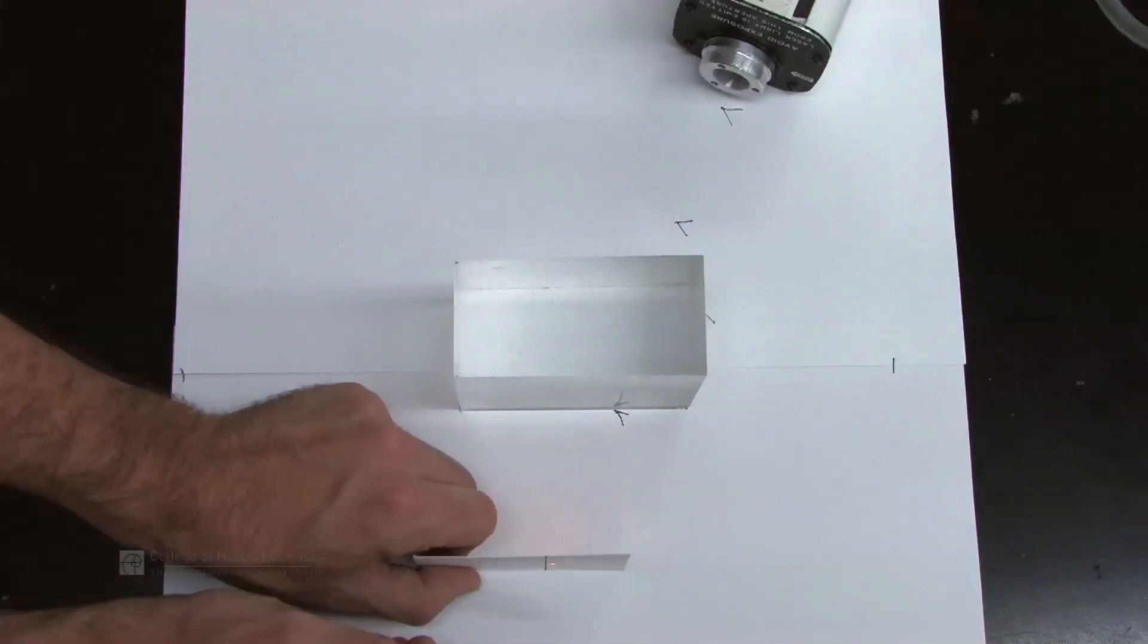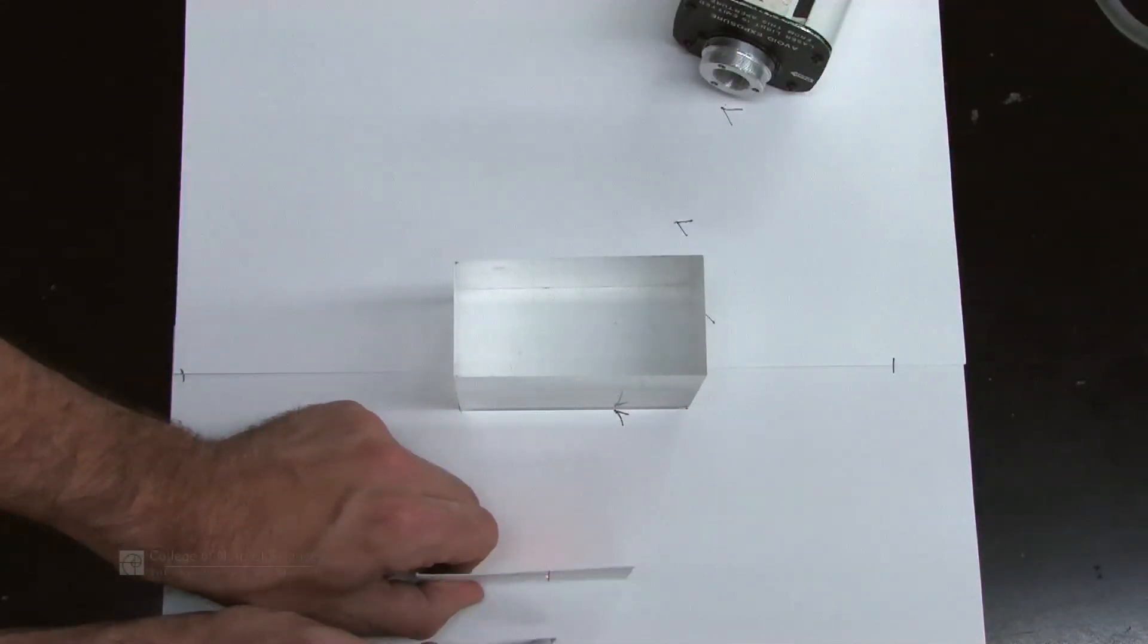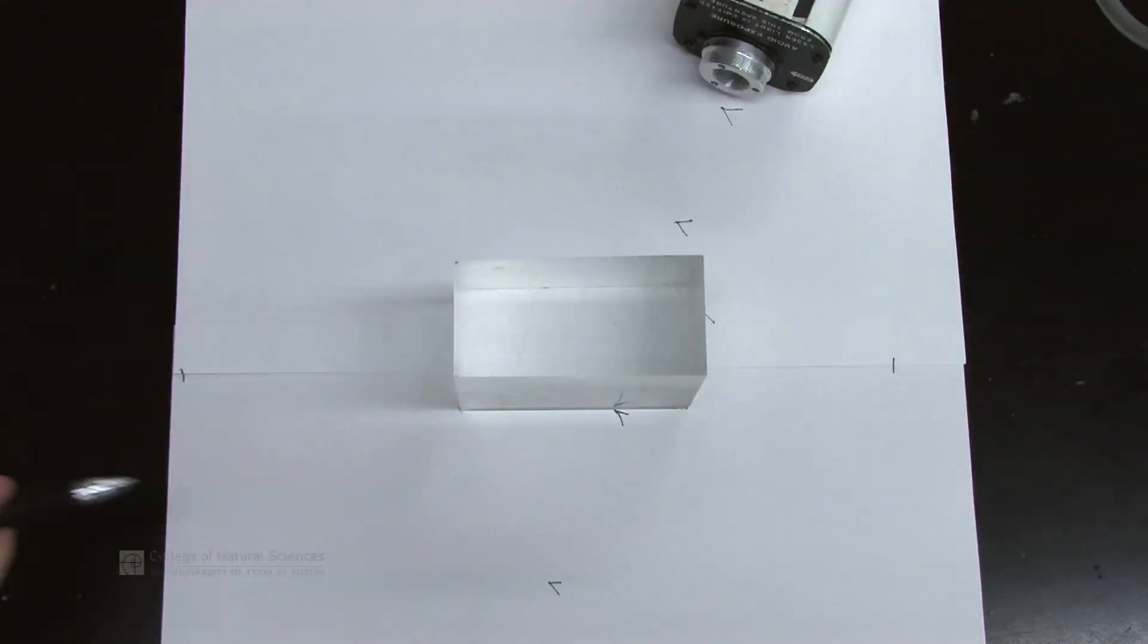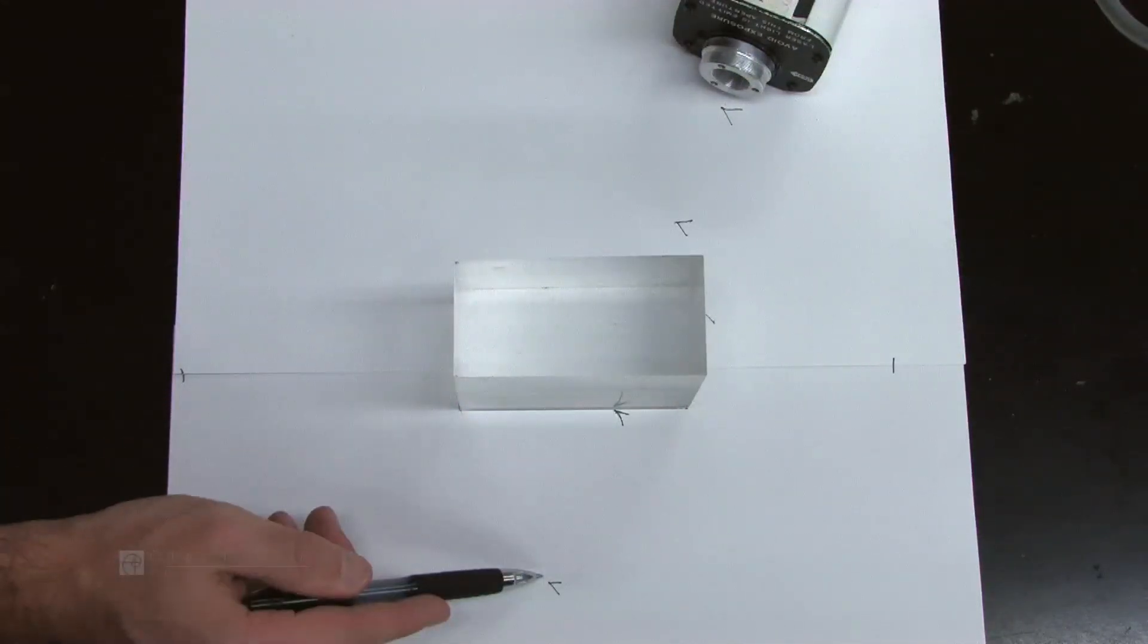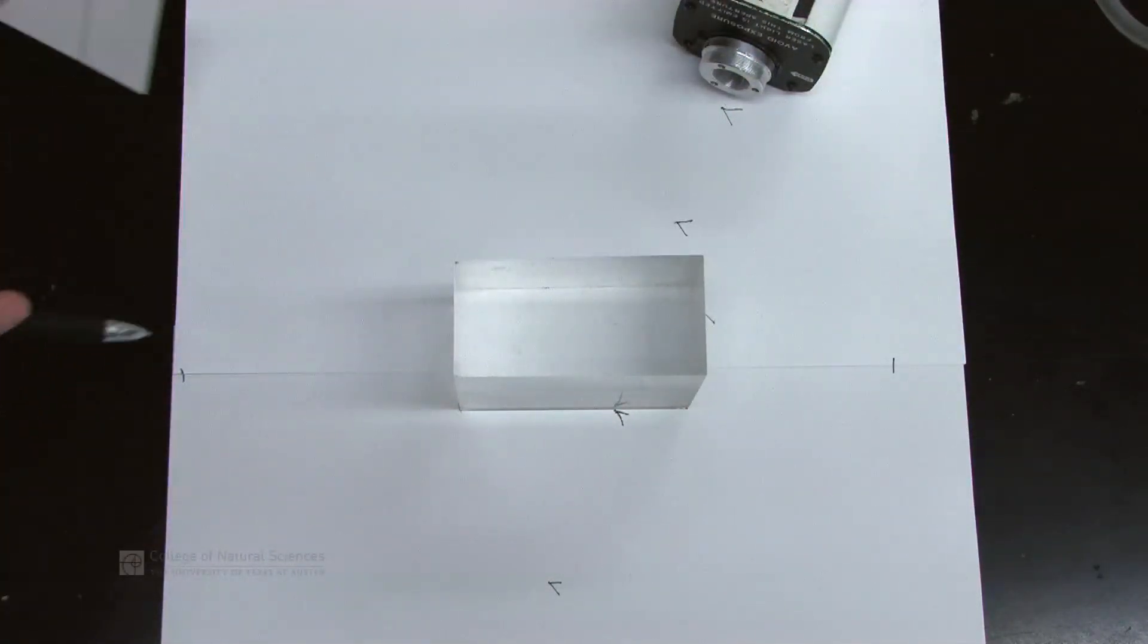I'm going to find another point further back. Make sure the card is vertical again. Draw a point and label it. So now I have the laser coming in, laser coming out of the block, and it's going to refract in the middle. So this will help us take our data.